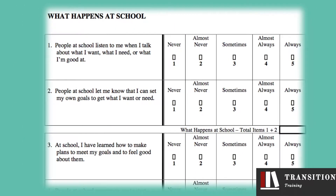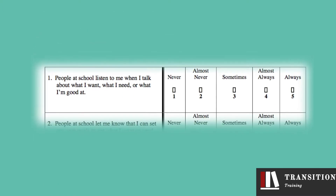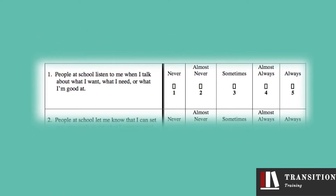You will know this by the first item on the student version ending in a preposition: 'People at school listen to me when I talk about what I want, what I need, or what I'm good at.' We all know that should read 'what I do well,' but no one asked me.